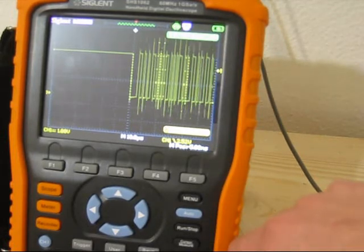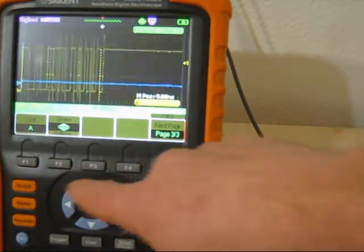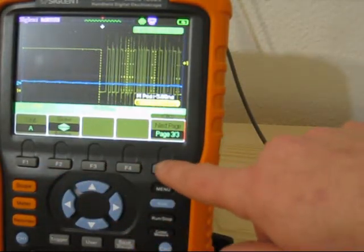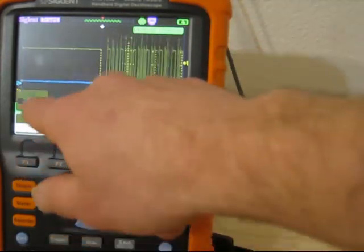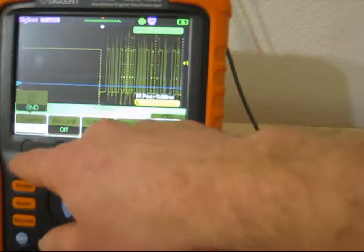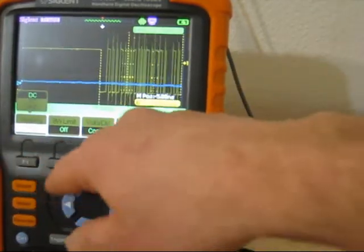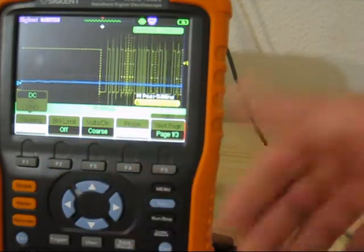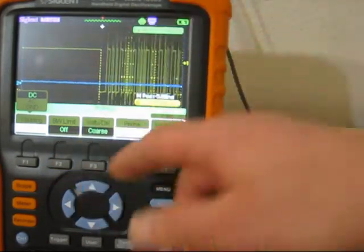Now what can we do? In the channel options, channel 2, the coupling is DC, AC, ground. There is just a software ground. There is no relay inside there or something. Of course you don't even have a real ground.